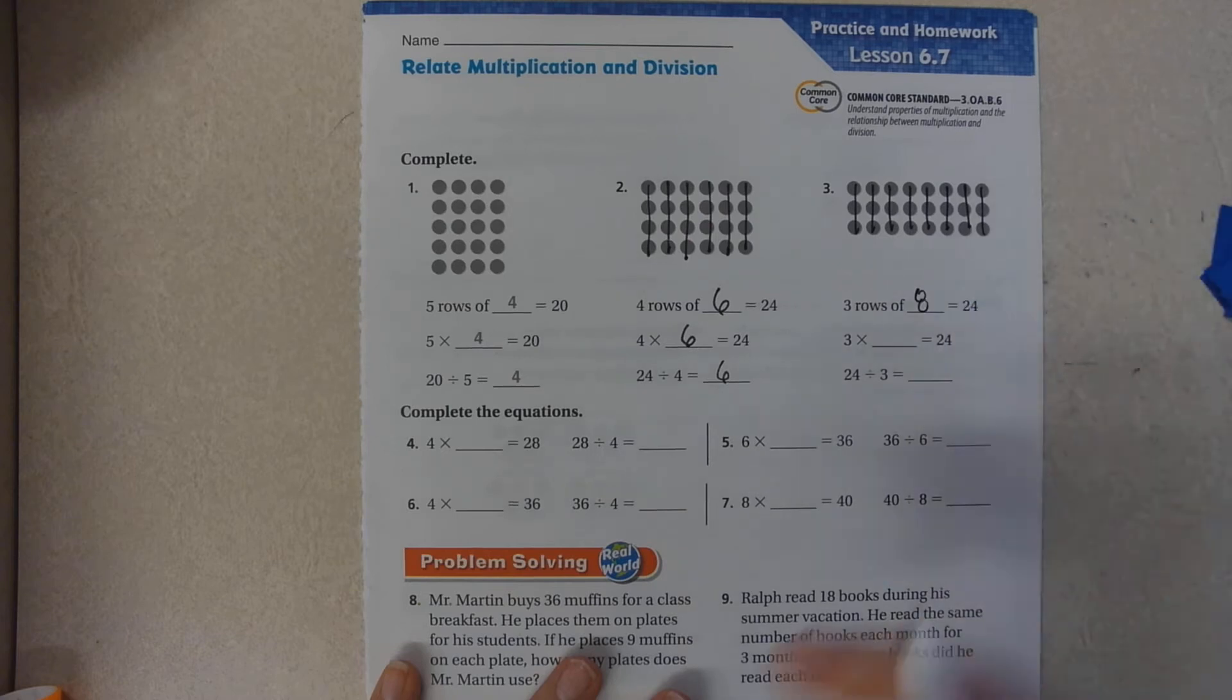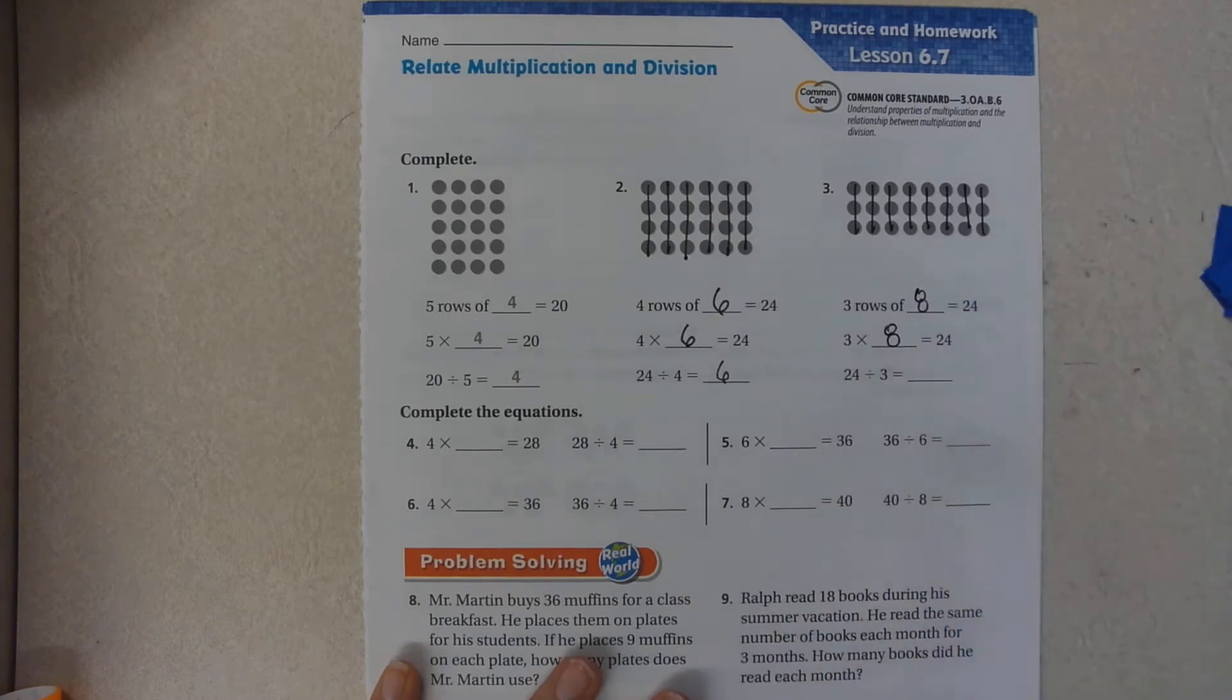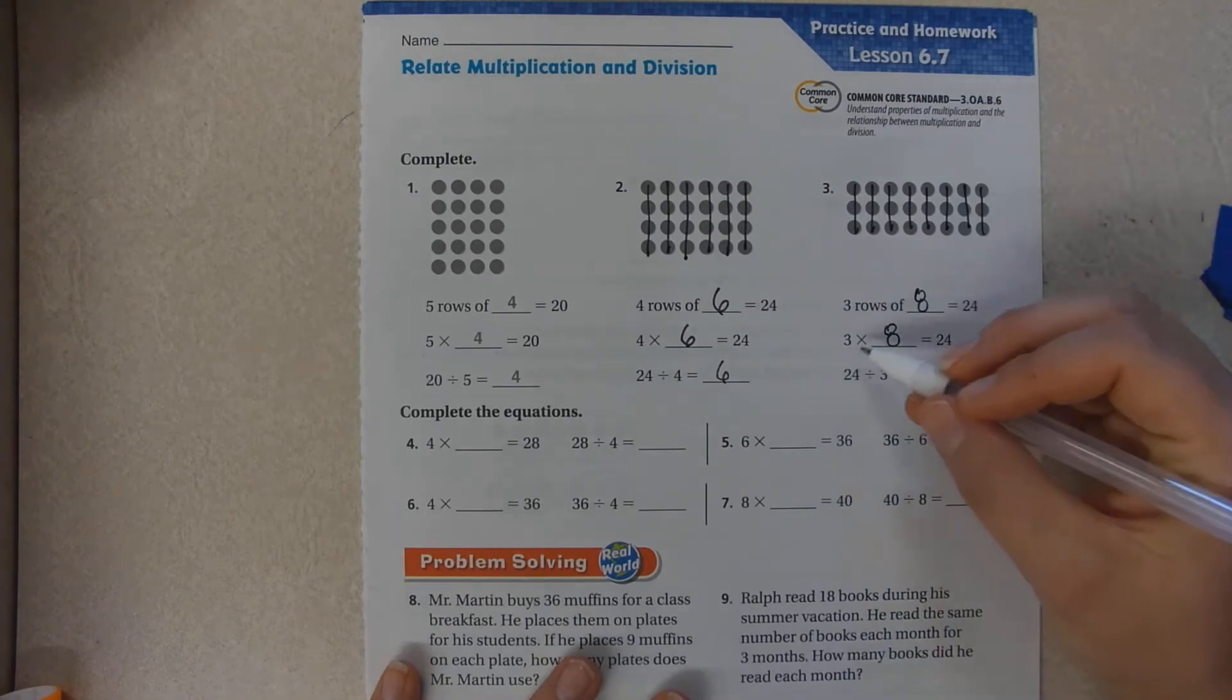There are 8 in each row. So 3 times 8 is 24, or 24 divided by 3 is 8.